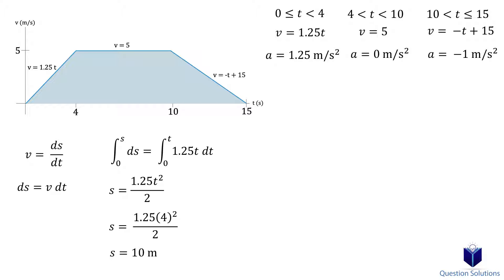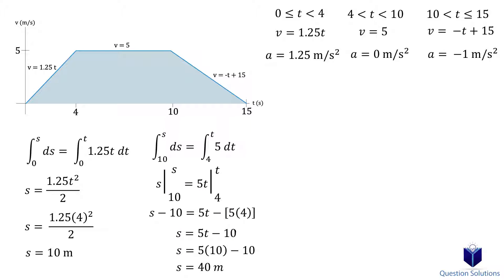Now we can write the next integral for the next segment with the lower bounds of 10 meters and 4 seconds. Solving gives us the displacement equation for the segment between 4 seconds and 10 seconds. Let's substitute 10 seconds into this equation to figure out the position of the bike at 10 seconds. Solving gives us 40 meters. So the bike is now at a position of 40 meters at 10 seconds.